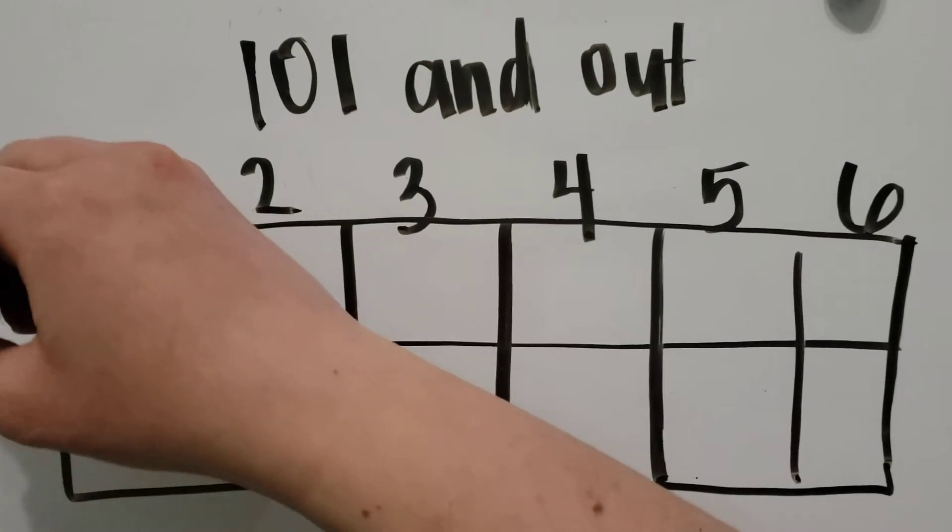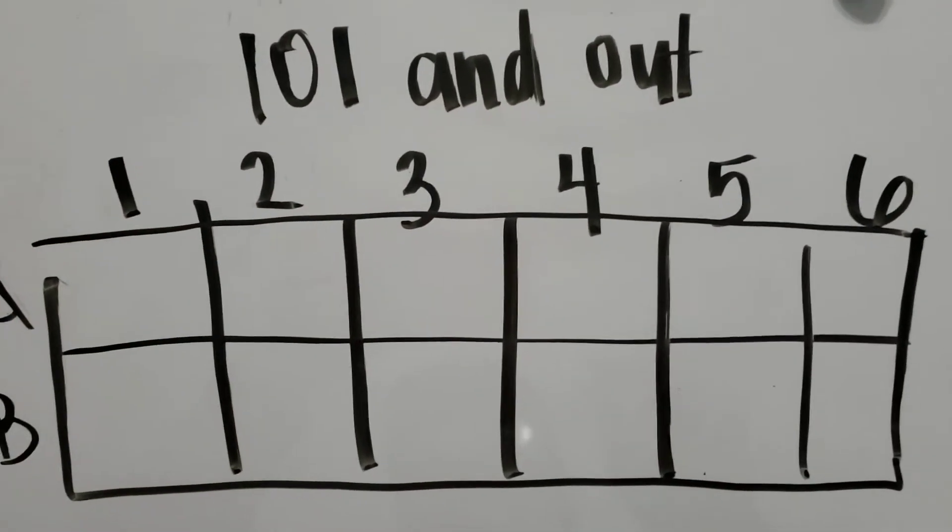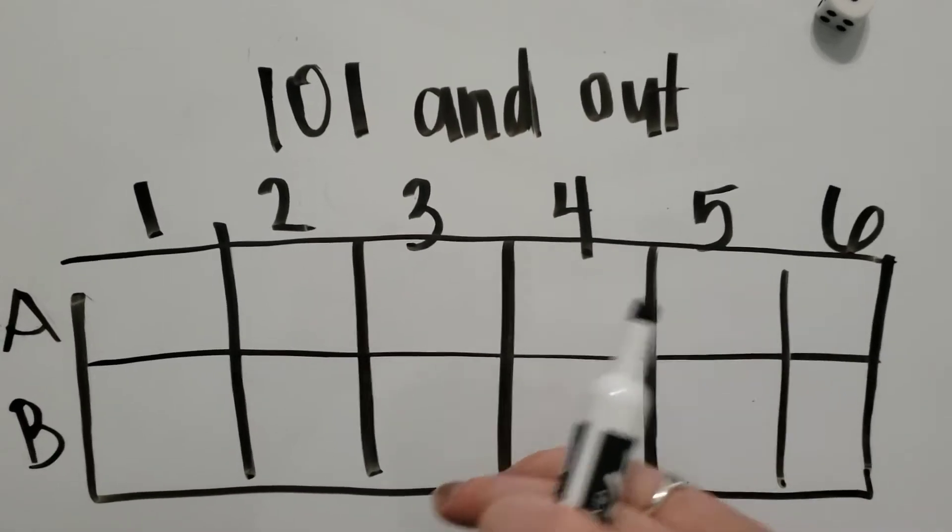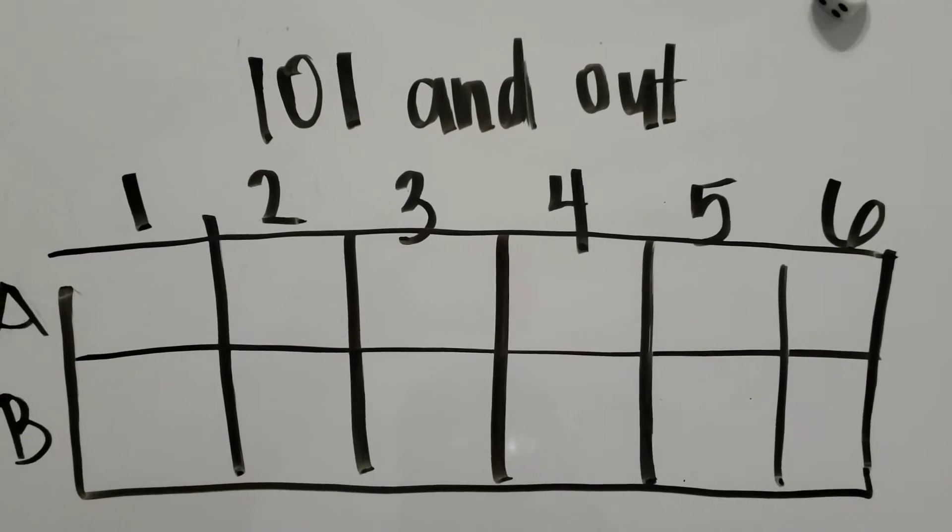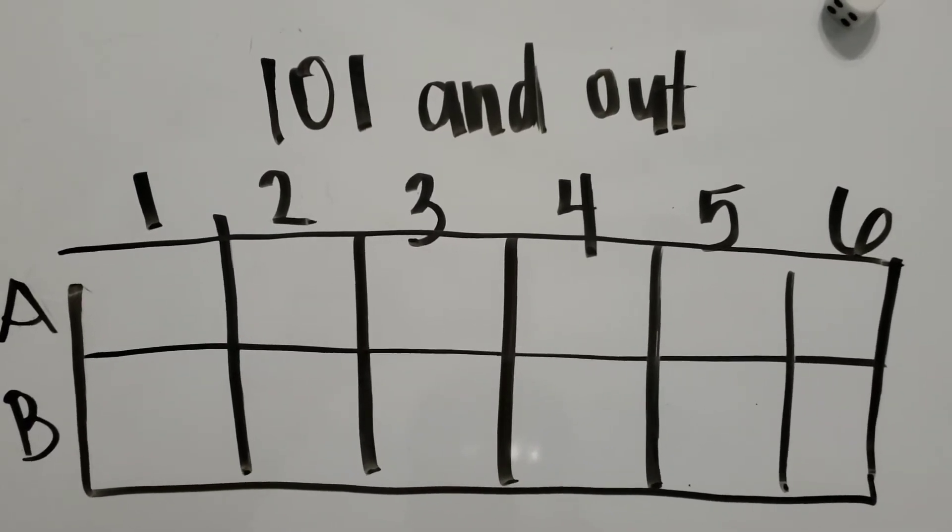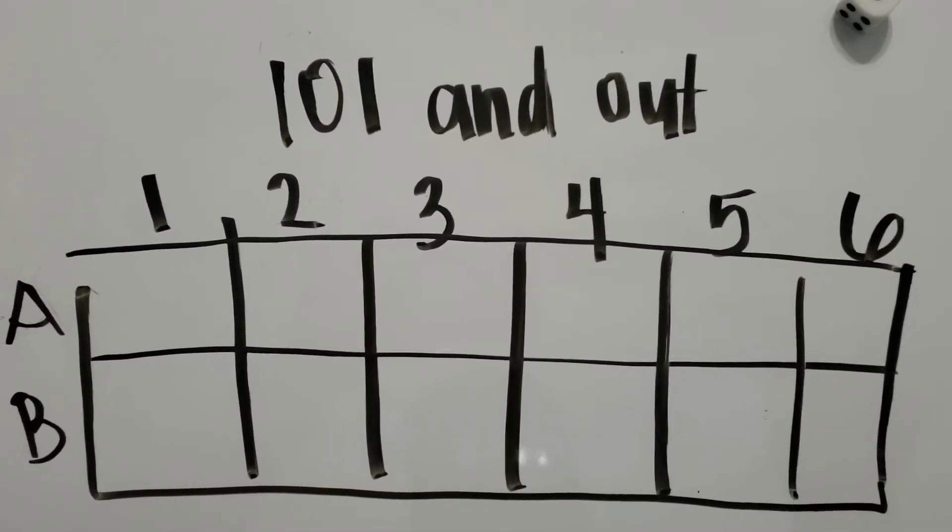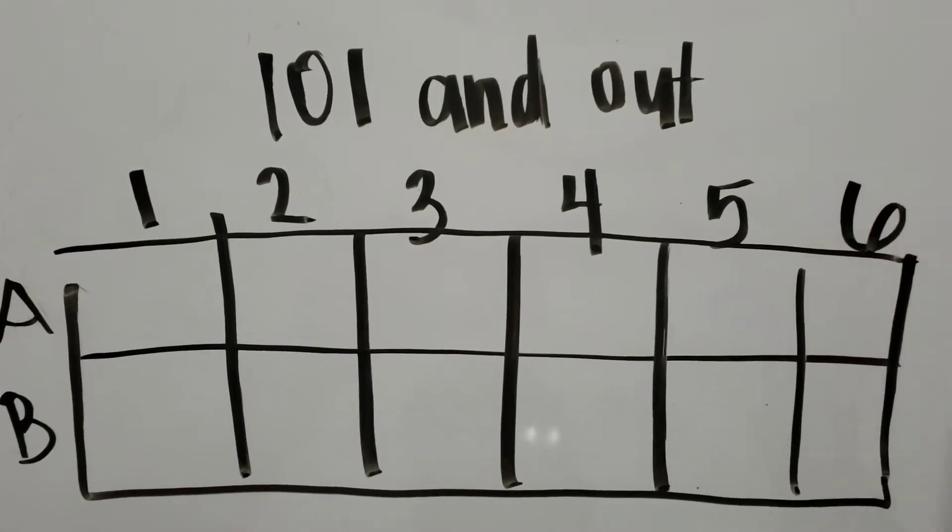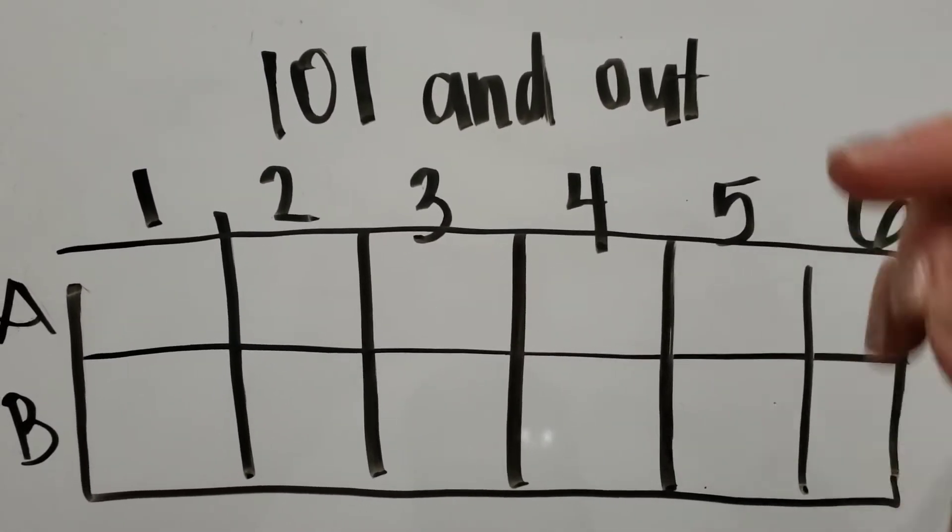So you have just team A or team B or partner A and partner B. And each time you roll the dice, you are going to choose if you want that number to be in the ones place or the tens place. And you'll keep a running total until you get to the end and you will see who is the closest to 100. So I'm going to show you how to play. I'll give you an example.